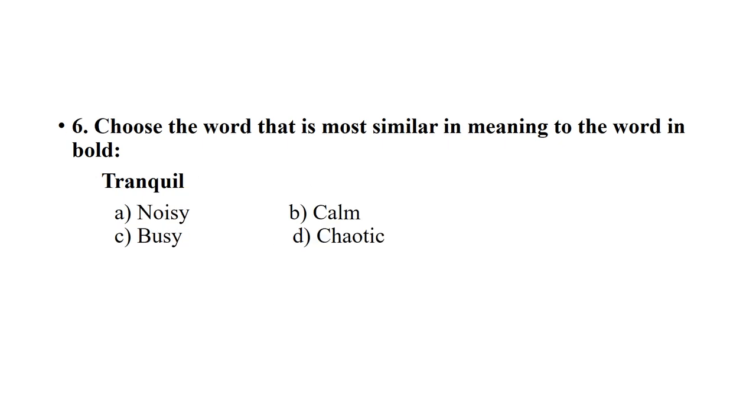Next is Tranquil. Tranquil means PURITMAAT. The correct option is Calm. Next is Fortitude. Fortitude means PURITMAAT. The correct option is Strength.